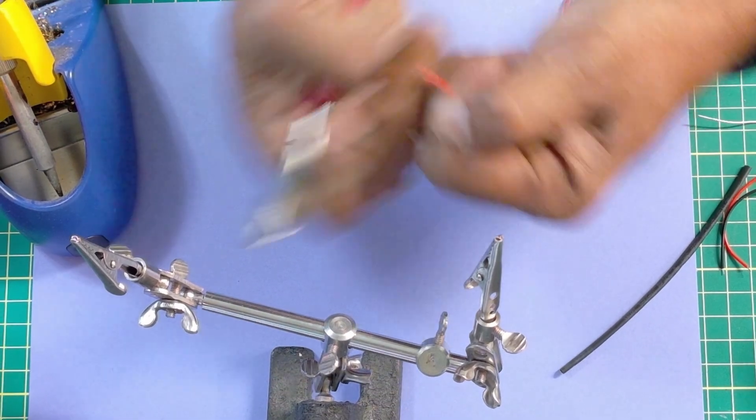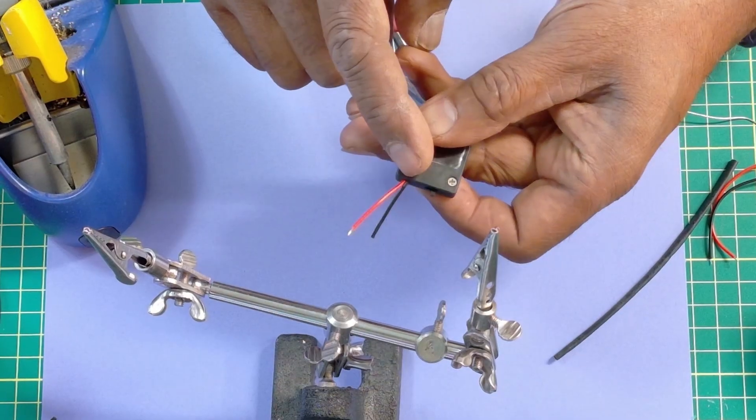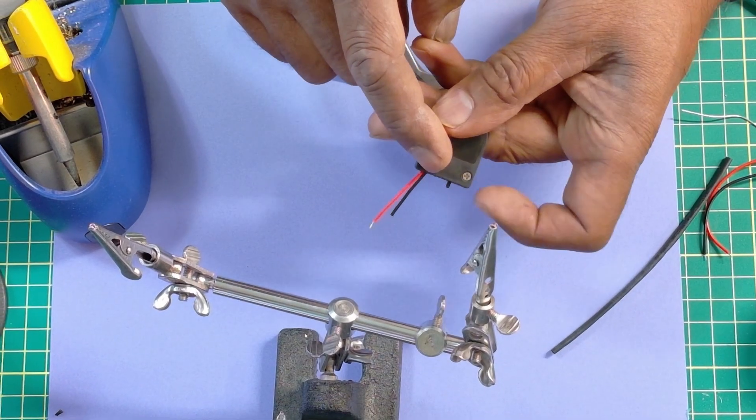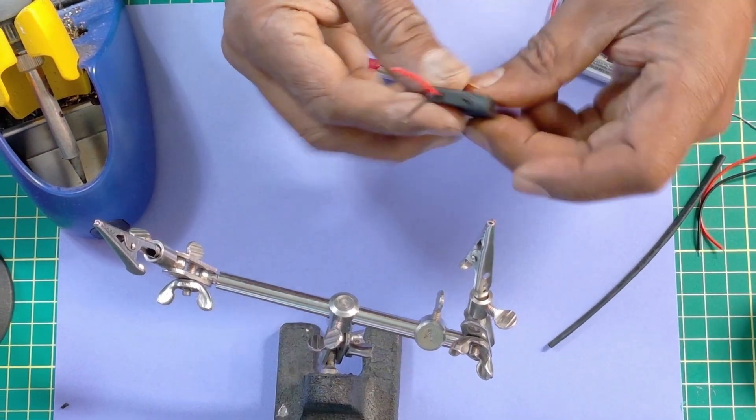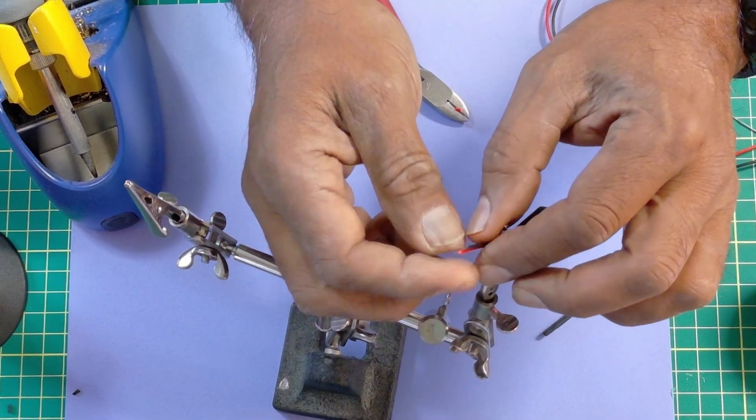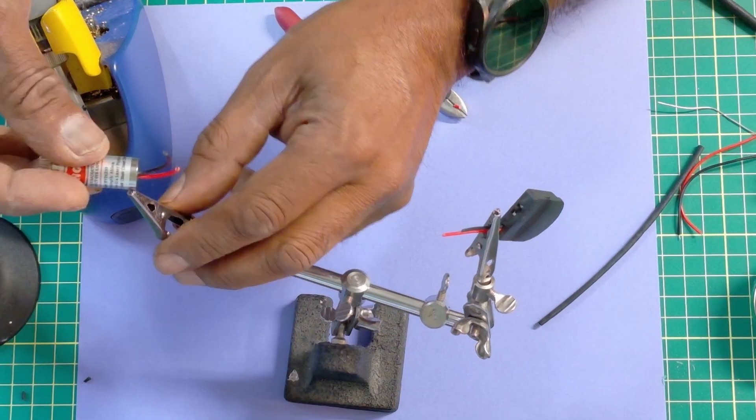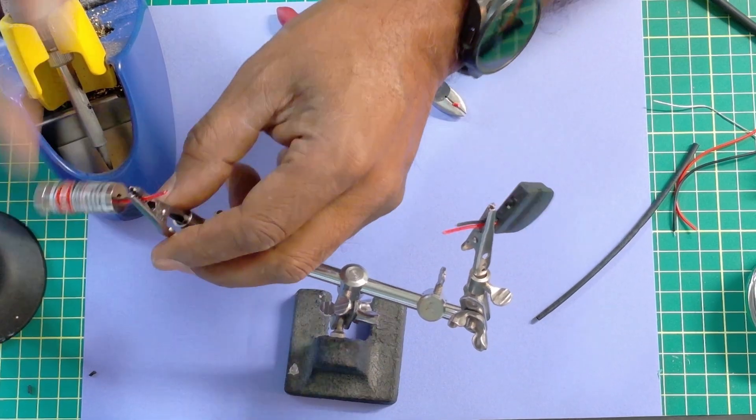I have the battery in this already, but I have the switch on the off setting right there. And what I'm going to do next is just add a little bit of solder to the ends of these to get them ready.